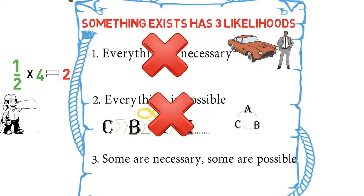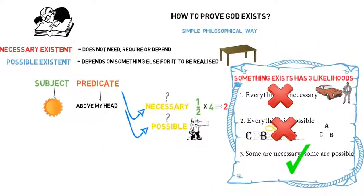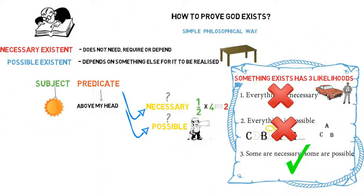This leaves us with the third likelihood, which some existents are necessary and some existents are possible, which is the correct answer. And a necessary existent that does not need, require or depend upon any other existent for coming into being could only be God, which will be explained in further lessons.